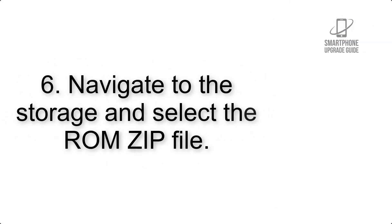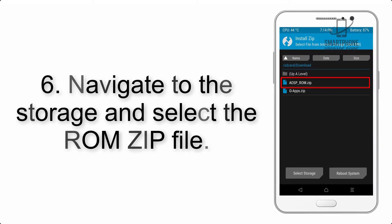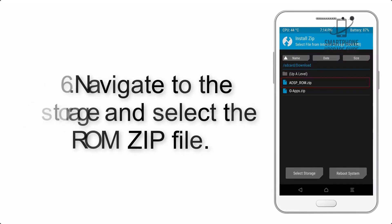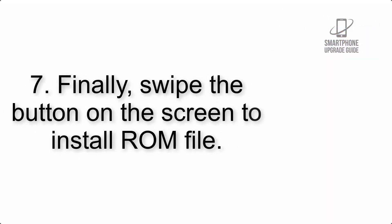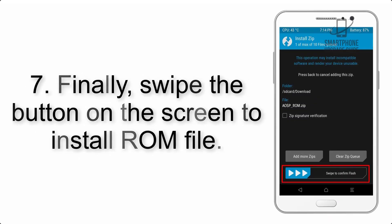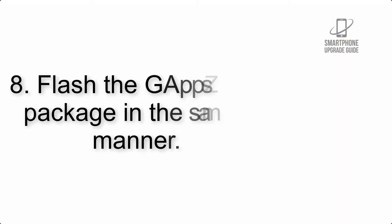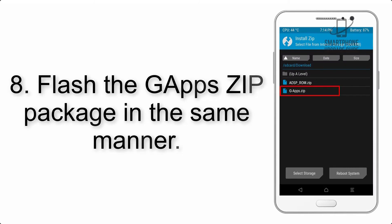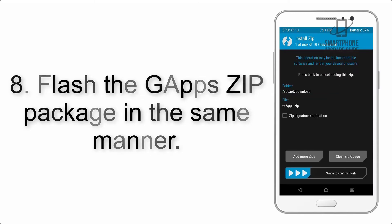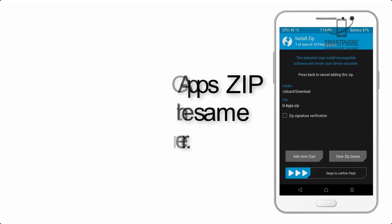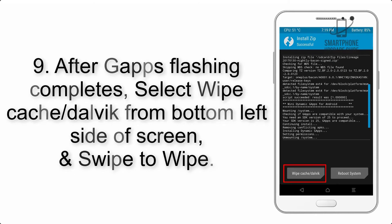Step 6: Navigate to the storage and select the ROM zip file. Step 7: Swipe the button on the screen to install the ROM file. Step 8: Flash the GApps zip package in the same manner.